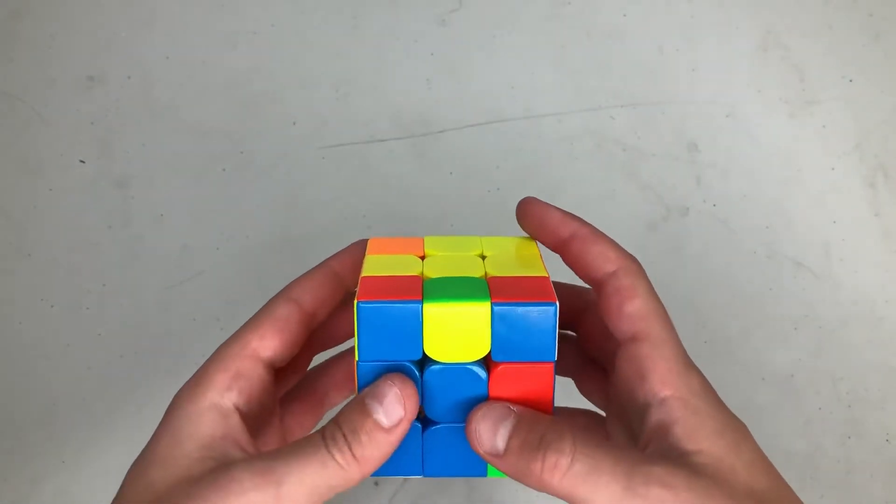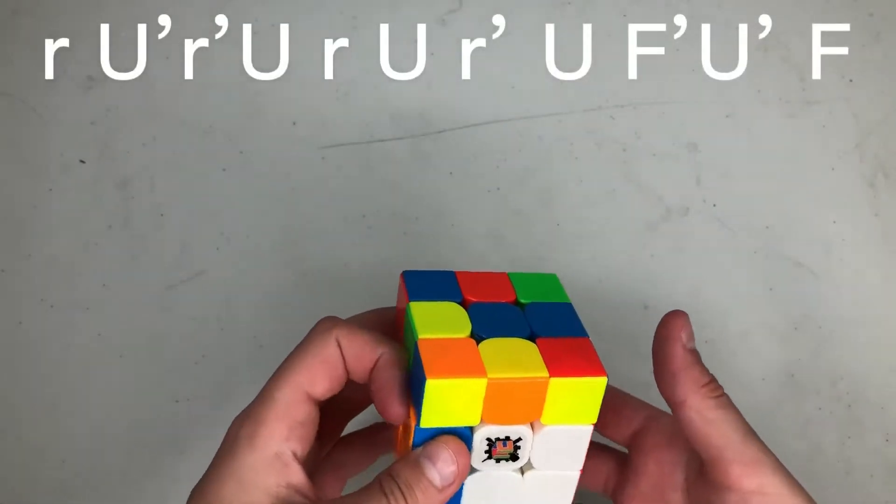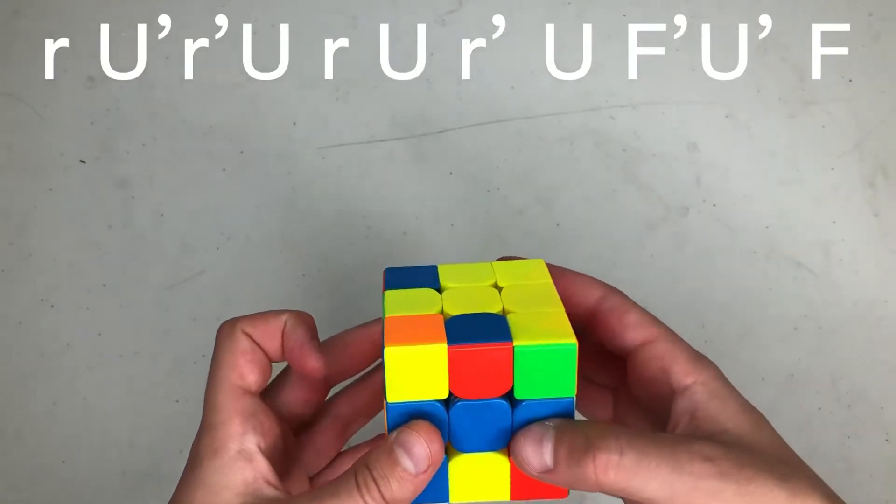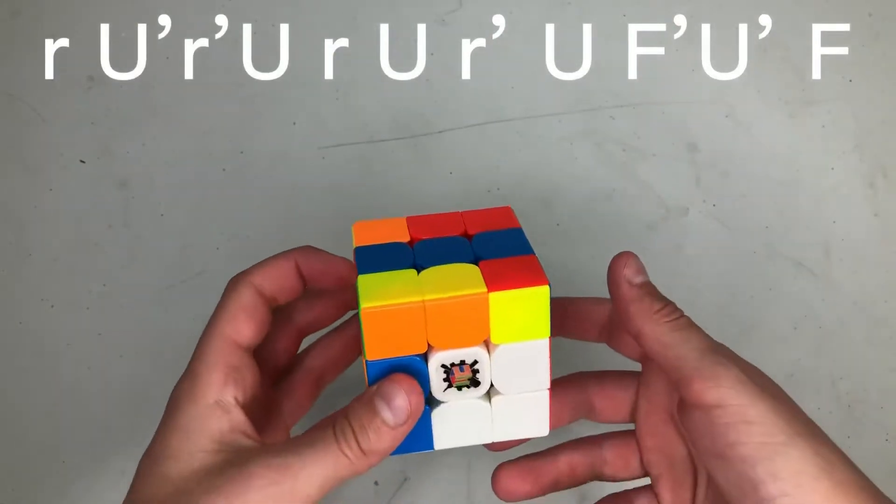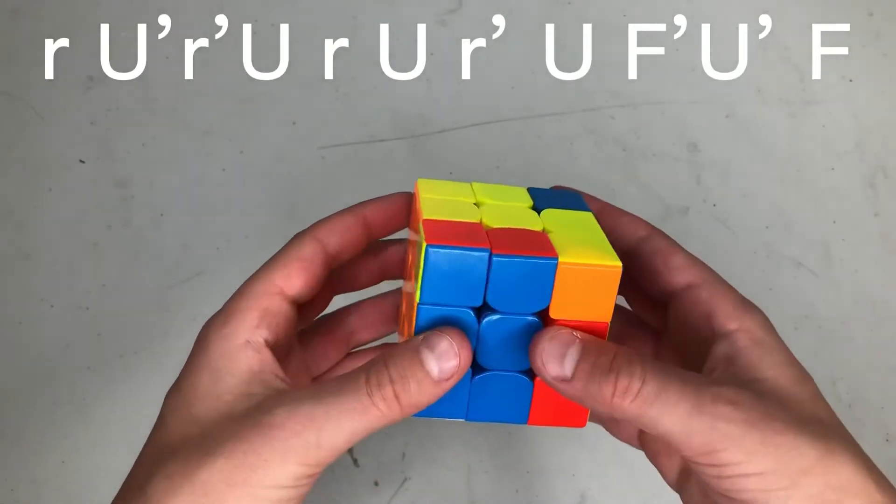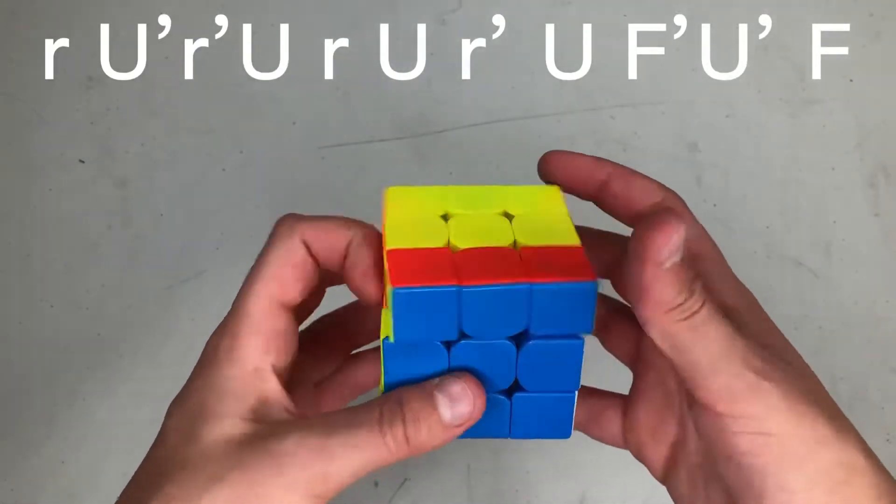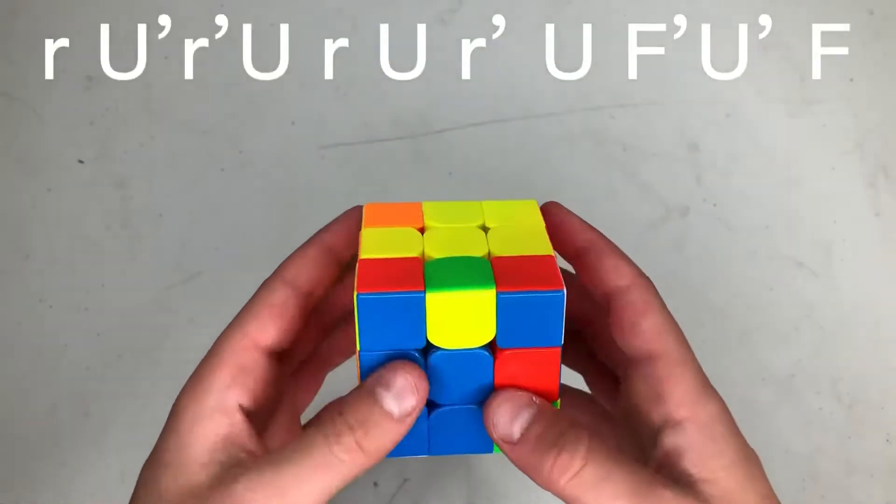So from this angle, the algorithm is Y R, U prime, Y R prime, U, Y R prime, U, F prime, U prime, F. Let me show that again one more time.